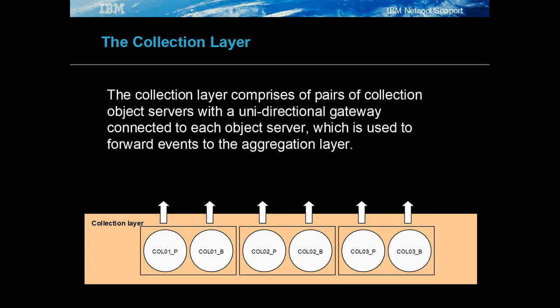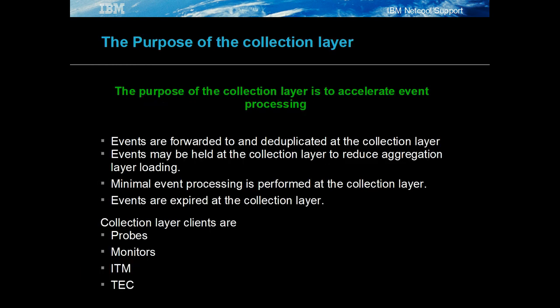The collection layer comprises pairs of object servers connected to the aggregation layer using unidirectional gateways. The collection layer object servers are pairs for use with the probe server and server backup properties. These allow object server failover and failback. The purpose of the collection layer is to accelerate event processing.